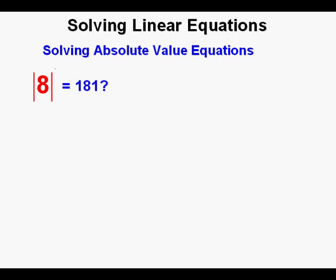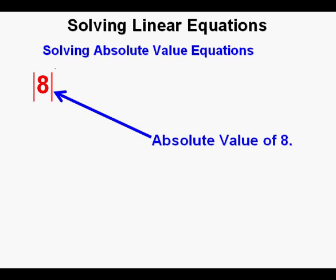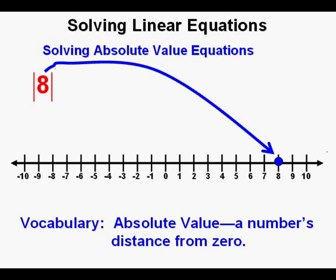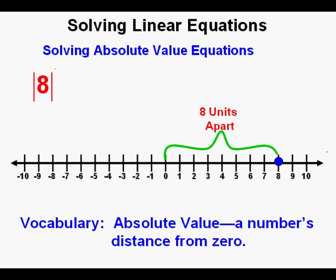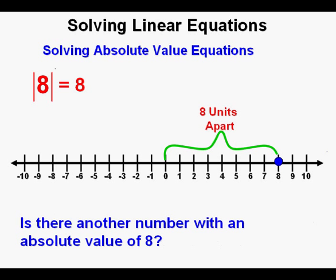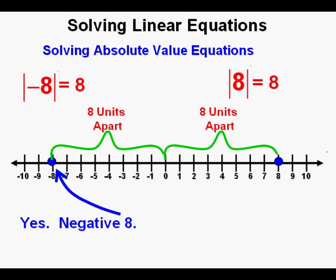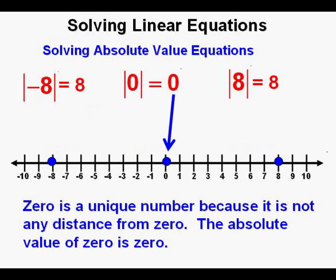Let's take a look at the 8 bordered by two vertical line segments. This is not the number 181 — this is the number 8 surrounded by what are called absolute value bars, or absolute value brackets. The concept of absolute value is that a number's absolute value is its distance from 0. On the number line, 8 is 8 units away from 0, so the absolute value of 8 is 8. And negative 8 is also 8 units from 0, only in the other direction — so the absolute value of negative 8 equals 8.